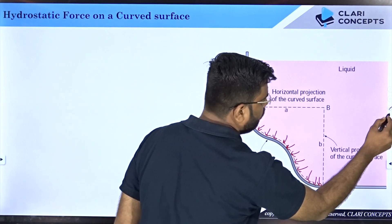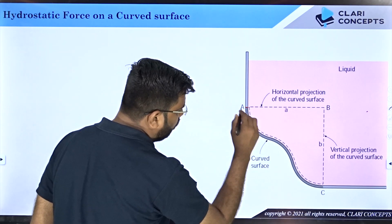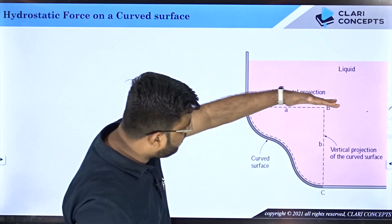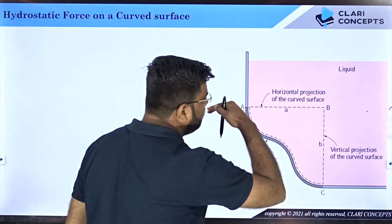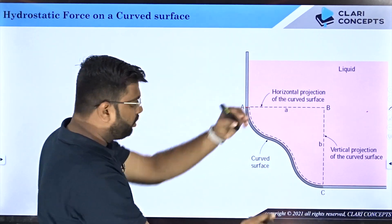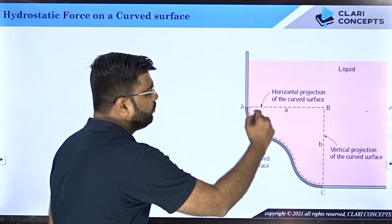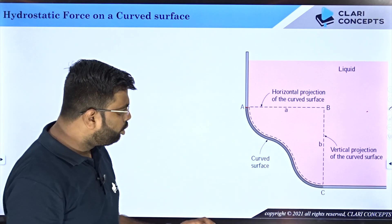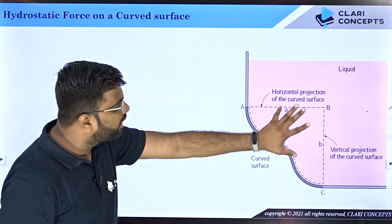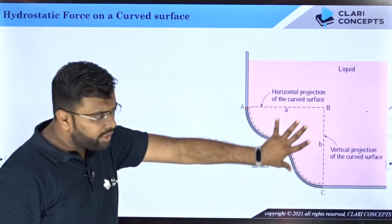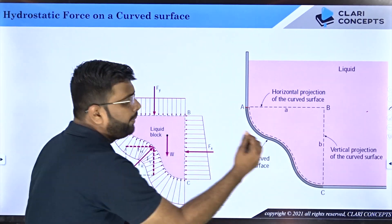What we do is mark a horizontal line from one end and a vertical line from the other end, and then look at the amount of fluid captured between these two planes and the surface itself. Whatever dashed lines you see form the pocket of the fluid element filled in this region. We then take this pocket outside, because the fluid is at rest, meaning all forces acting on this fluid element will also be in equilibrium.